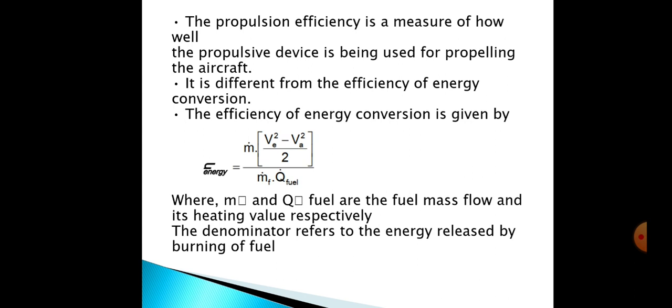The propulsive efficiency is a measure of how well the propulsive device is being used for propelling the aircraft. It is different from the efficiency of energy conversion. The efficiency of energy conversion is given as ηe = ṁ(Ve² - Va²)/2 divided by ṁf·Qfuel, where ṁf and Qfuel are the fuel mass flow and its heating value respectively. The denominator refers to the energy released by burning of fuel.